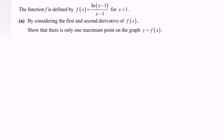So given f(x) = ln(x-1) / (x-1). We are going to find the first derivative and the second derivative. Let u = ln(x-1) and v = (x-1). By using the quotient rule, we differentiate the expression.